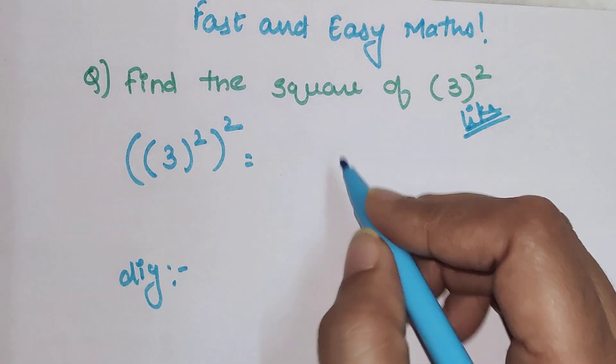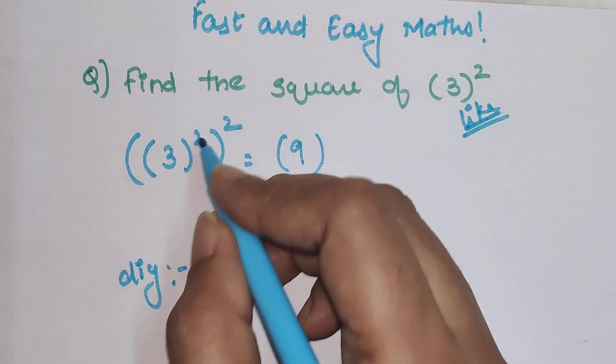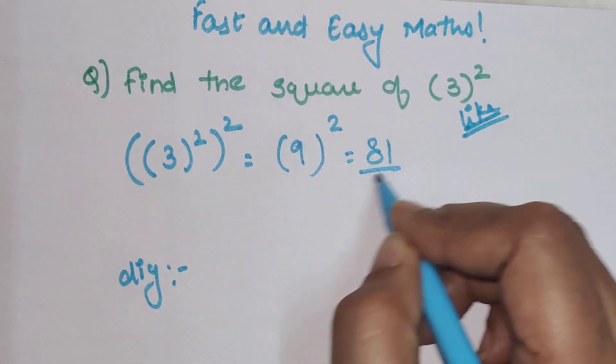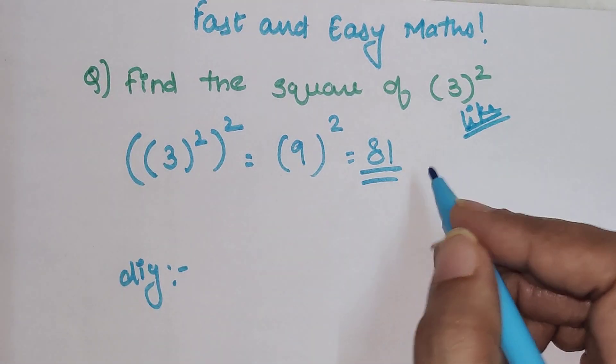So now we will start with the innermost. 3 squared is 9, and now that squared: 9 squared is 81. So 81 is your actual answer, not 9.